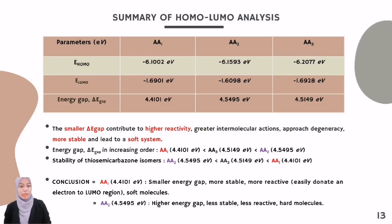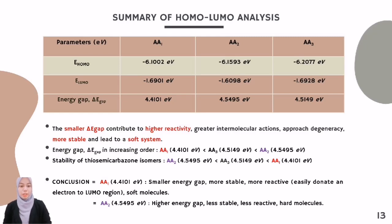Based on the table, the energy gap values in increasing order are AA1, AA3, and lastly AA2 at 4.5495 eV. For the stability of thiosemicarbazone isomers, AA1 is the most stable molecule compared to AA2 and AA3. As a conclusion, AA1 with an energy gap of 4.4101 eV has the smallest energy gap, making it the most stable and most reactive molecule, which can easily donate an electron to the LUMO region — hence it is a soft molecule. On the other hand, AA2 with an energy gap of 4.5495 eV has the highest energy gap, making it less stable, less reactive, and tending to become a hard molecule.